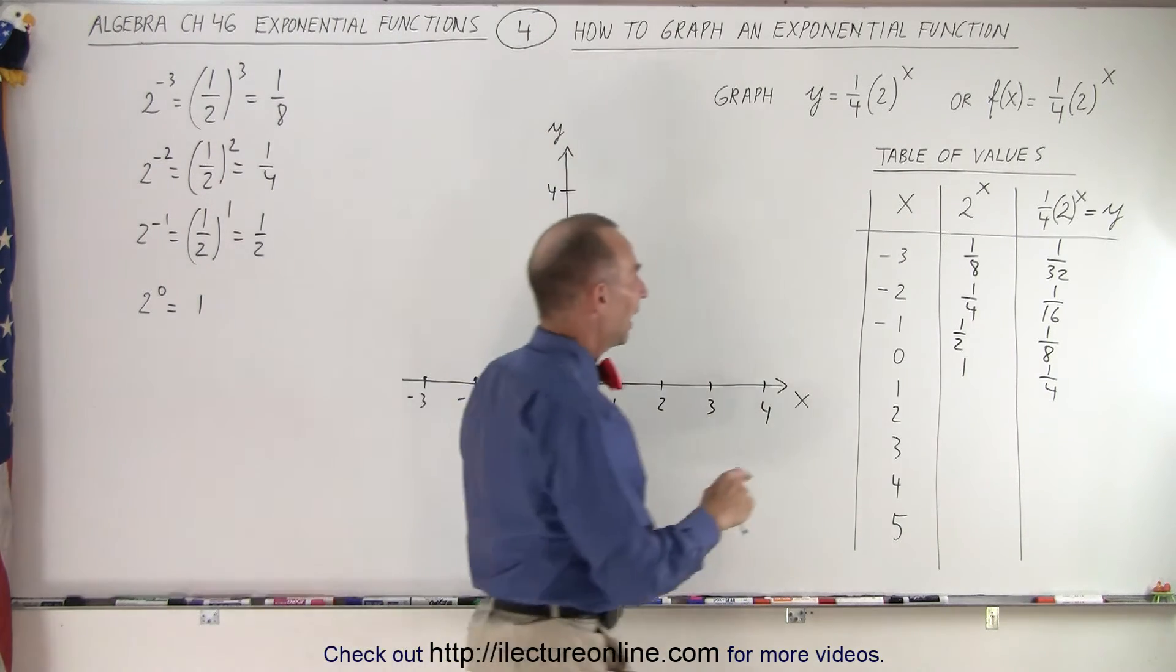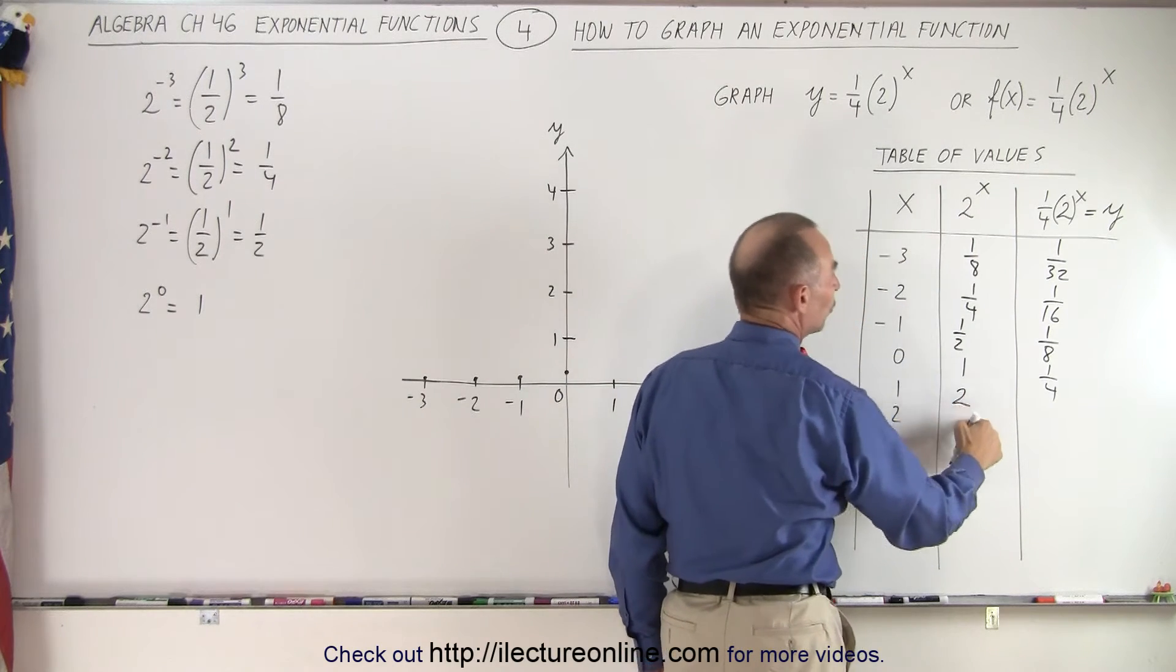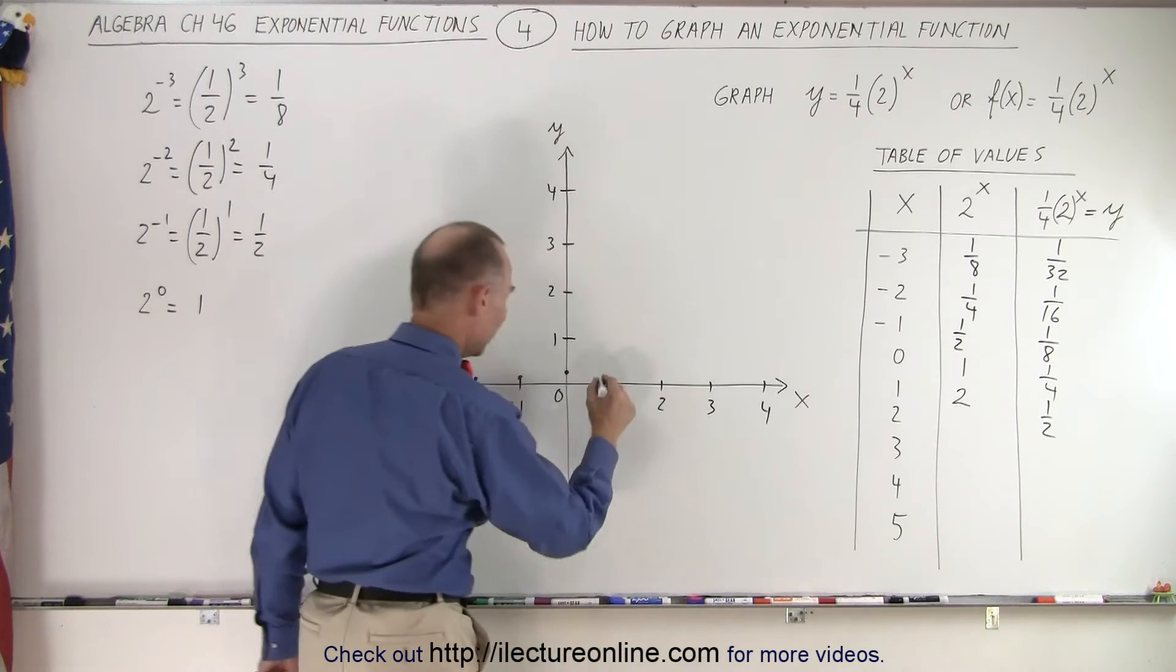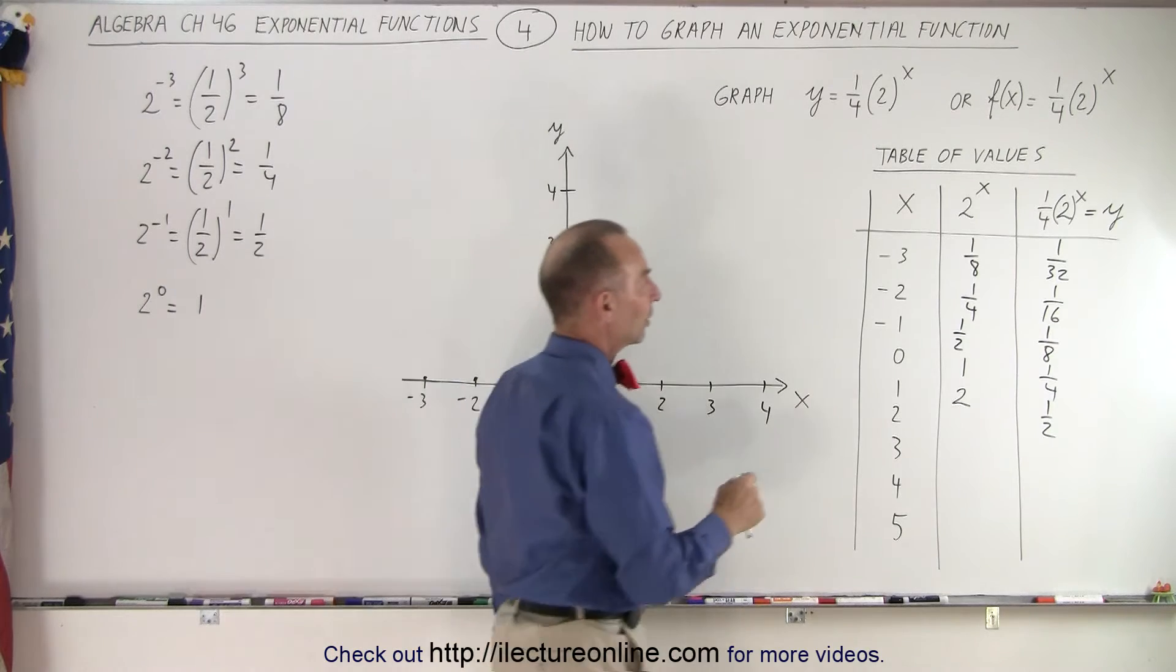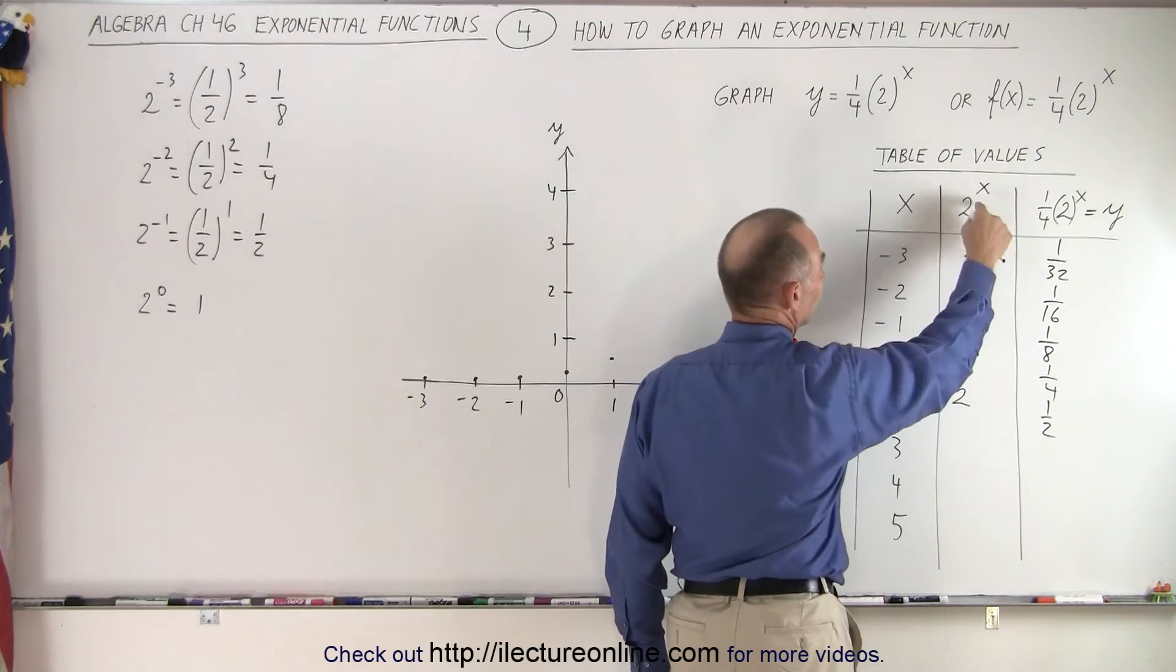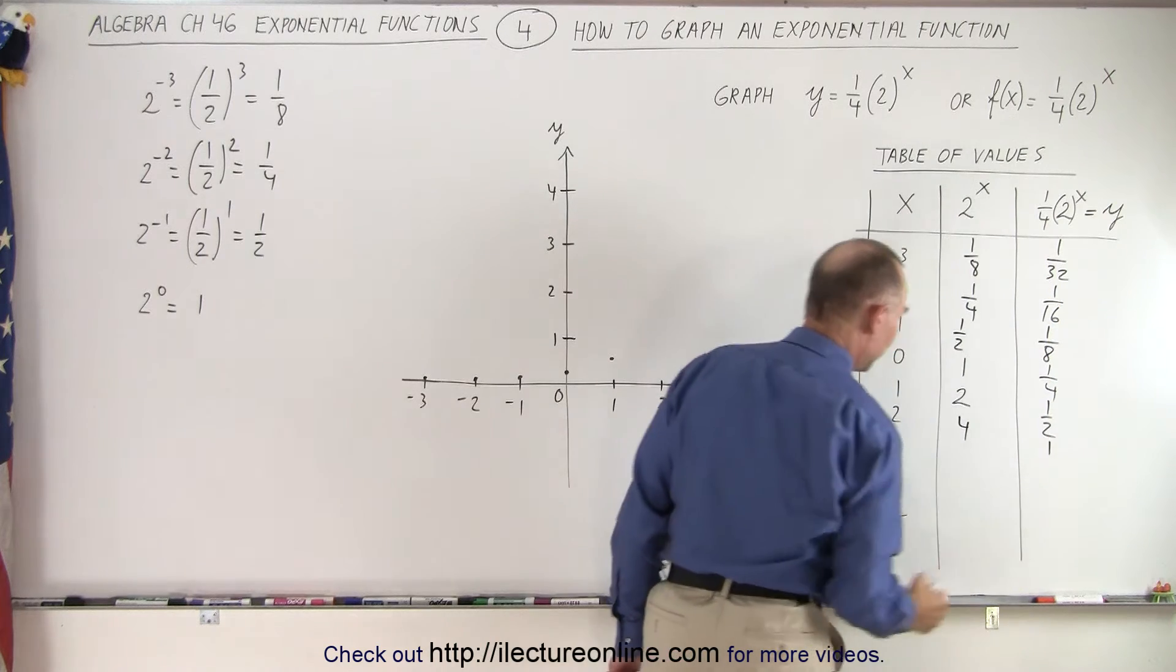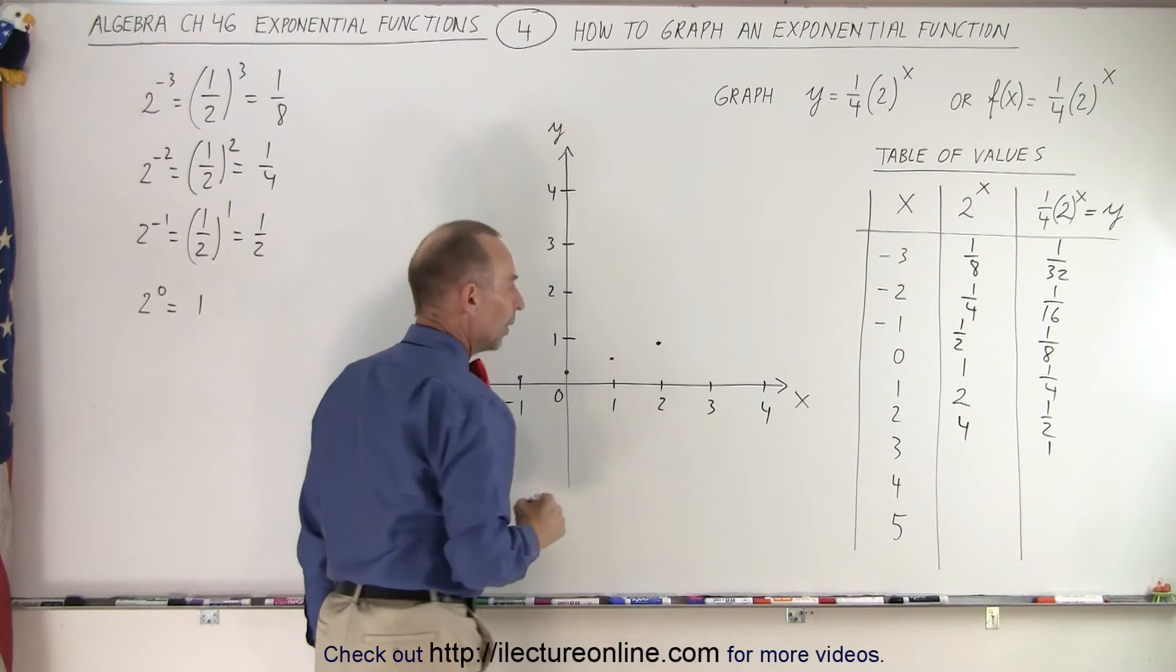Next we have x equals 1. So 2 to the 1 power, that's equal to 2. 2 divided by 4 is equal to 1 half. So when x equals 1, we're now up to 1 half. What if x is equal to 2? 2 to the second power, that's equal to 4. Divide by 4, that's equal to 1. So now when x equals 2, y equals 1.